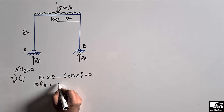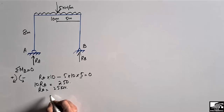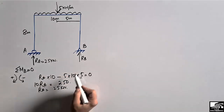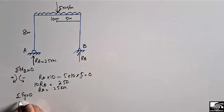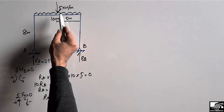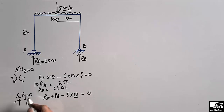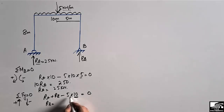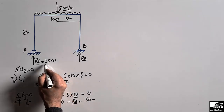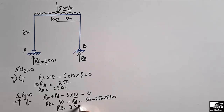Solving the moment equation gives 250, so R_A comes out to be 25 kilonewton. To find R_B we take the summation of vertical forces equal to zero, with upward forces positive and downward forces negative. R_B plus R_A minus 5 × 10 = 0, which gives R_B = 50 − 25 = 25 kilonewton.